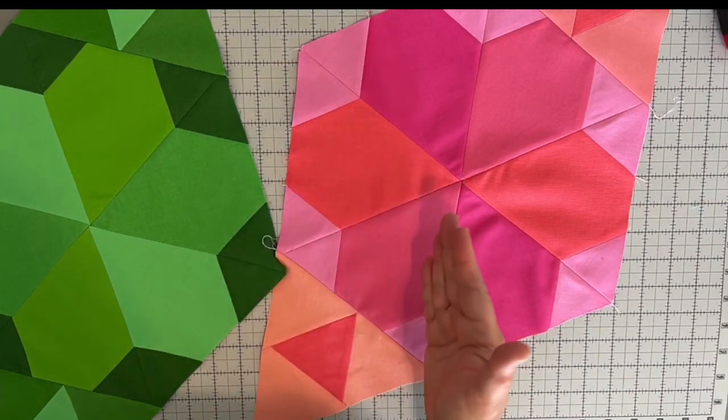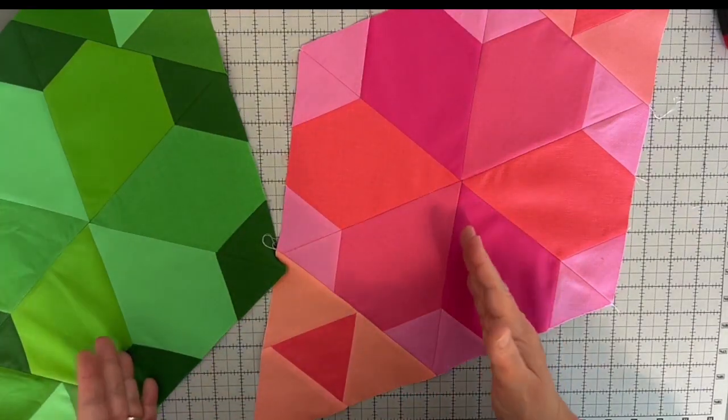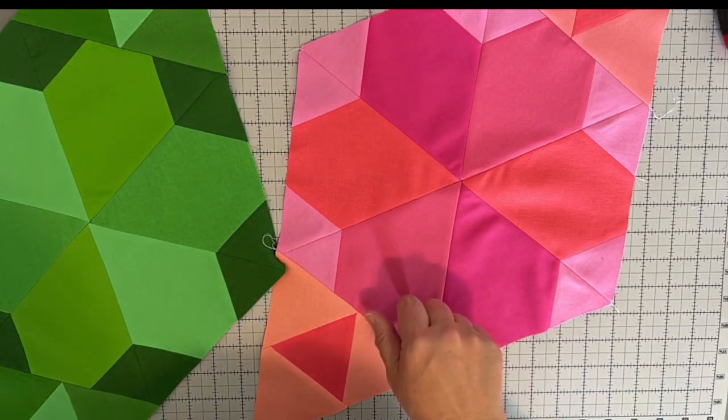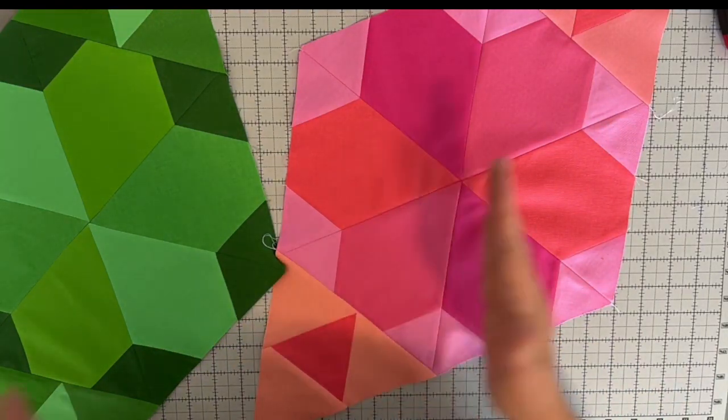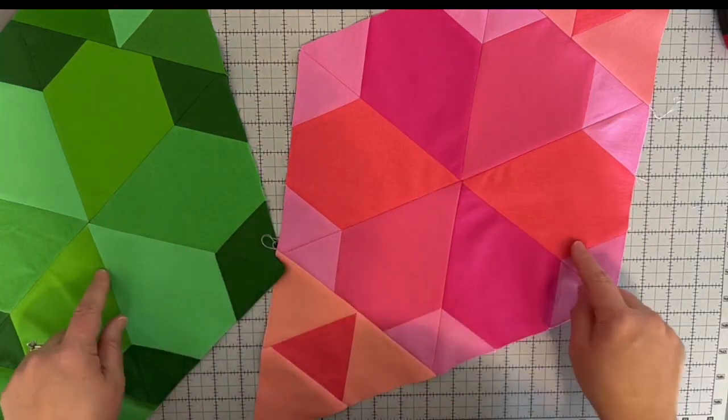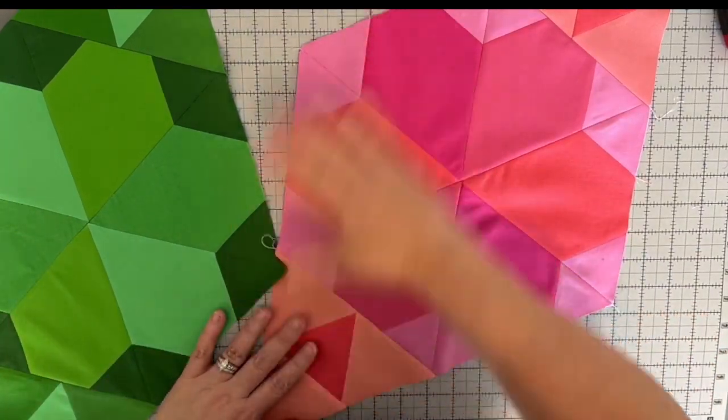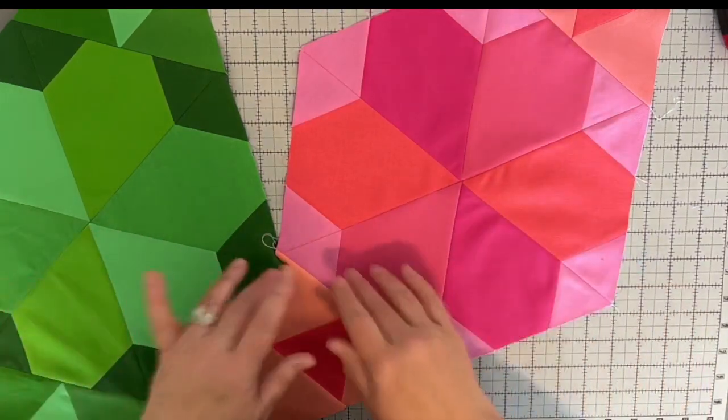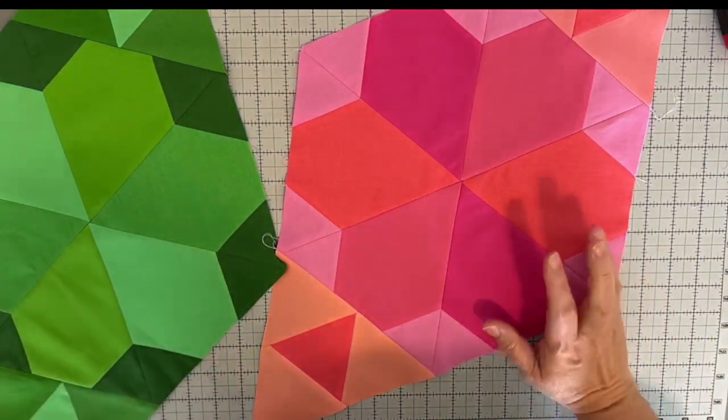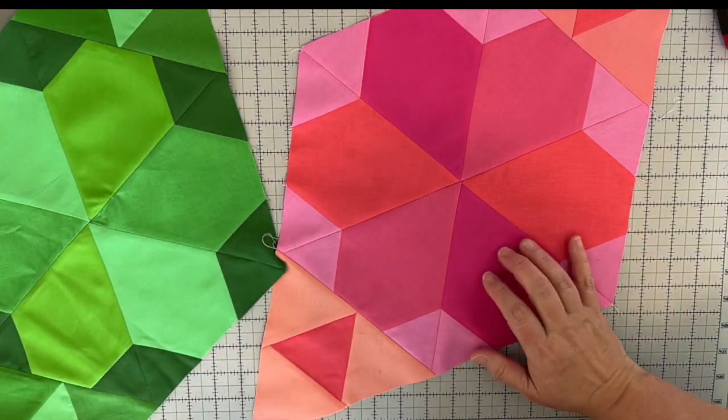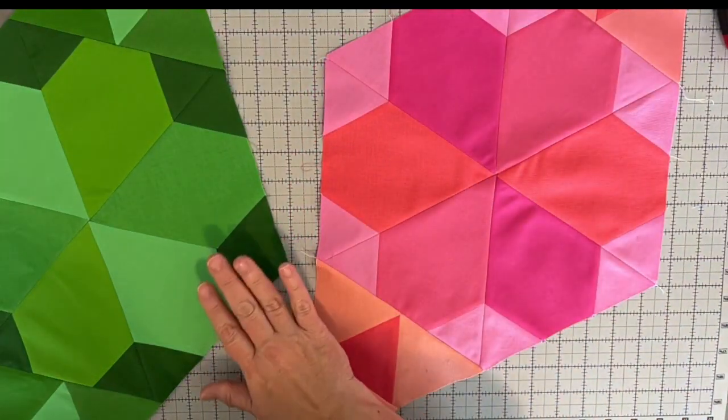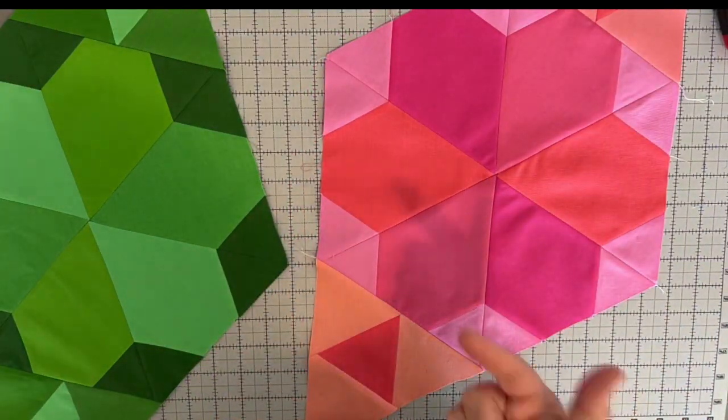Also, when you're cutting your squares for Block C specifically, make sure your longest length is horizontal, not vertical. We've been doing longest length vertical, but now this time we want it horizontal. You should be able to get all that you need out of that, you just have to think about it before you cut it.